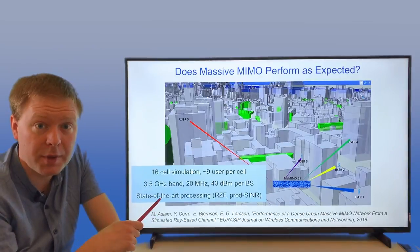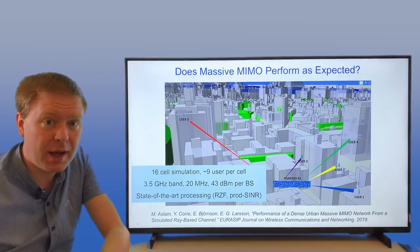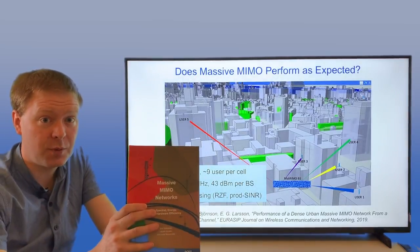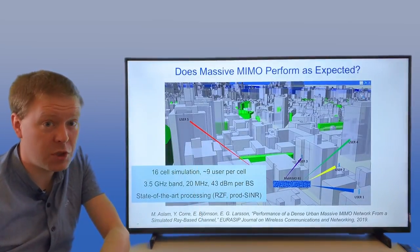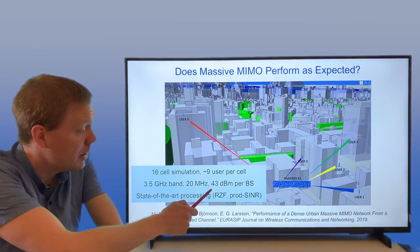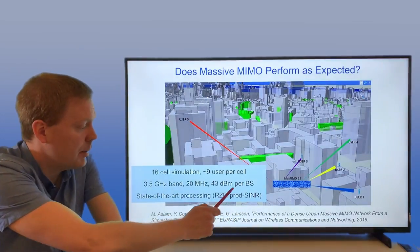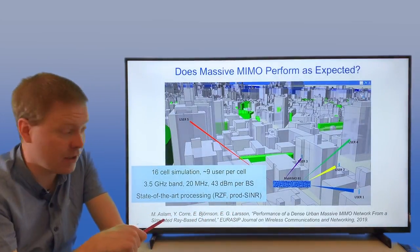We use the state-of-the-art processing that you can read about in my book Massive MIMO Networks. Actually, we're using the code from that book that you can find online to implement regularized zero forcing and optimize the downlink power to maximize the product of the SINRs.